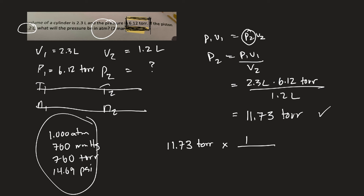I want atmospheres, so I'm going to put that one on top. And I have torrs, so I'm going to put its conversion factor on the bottom. Okay, so now I'll go on my calculator, 11.73 times 1 divided by 760. So I'm getting, on this question anyway, 0.015434 atmospheres.